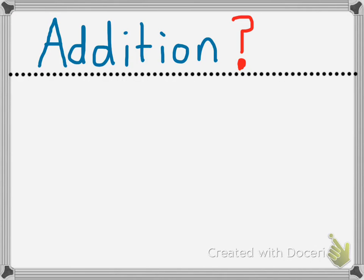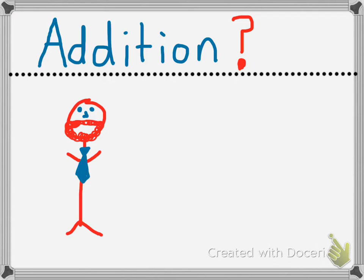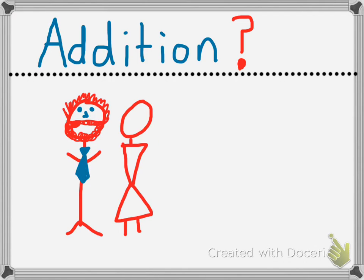For example, let's talk about my family. In my family, we have me, Mr. Cogswell, and my wife, Ms. Cogswell. So in my family, we have two adults. But that's not our whole family — that's just a part of our family. That's not our total family. We also have some children.